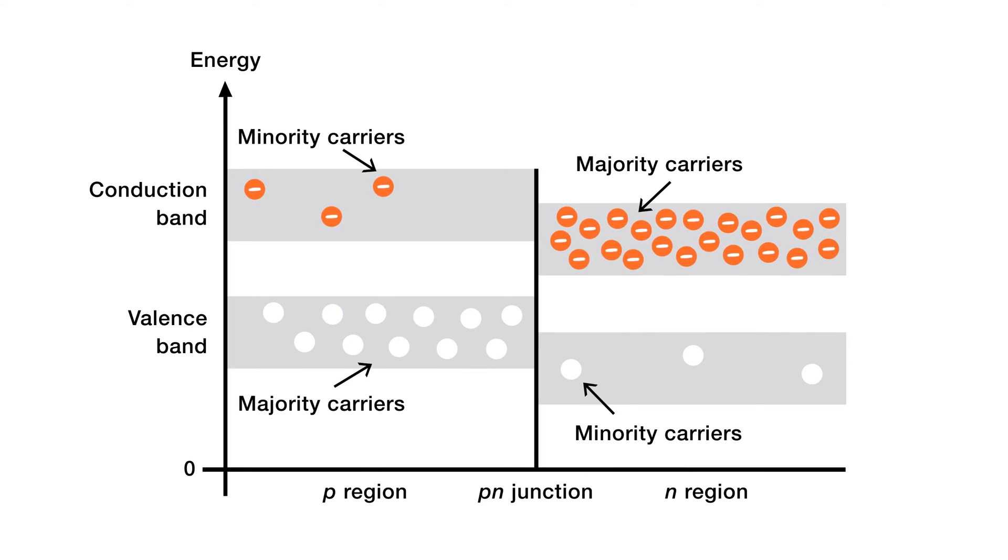If we try to examine the energy diagram for a p-n junction at the instant of formation, we can see that the valence and conduction bands in the n-region are at a noticeably lower energy level compared to the p-region valence and conduction bands. But we can also see that the upper part of the conduction band in the n-region and the lower part of the conduction band in the p-region overlap.